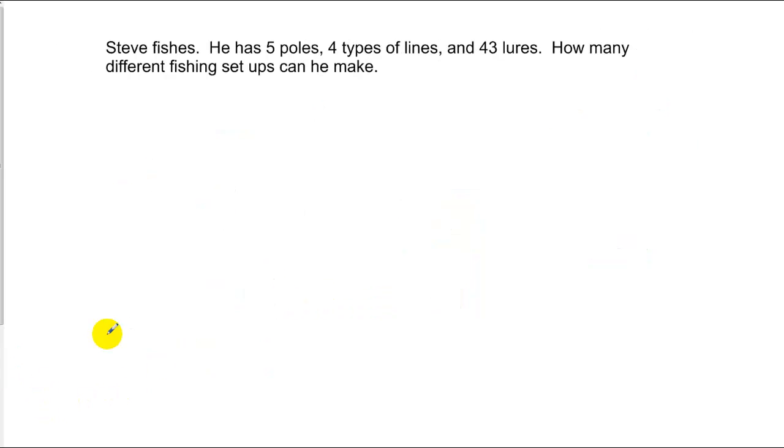Let's do a couple more examples like this. We've got a guy who fishes. He's got five poles, four types of line, and 43 different lures. You want to know how many different fishing setups he can make. One item of choice is the poles he can use, and he has five of those. He's got the line choices, four of those. And he's got 43 groups of lure choices. I want to know how many different ways he can put together his fishing setup. I just multiply all those together. And that's going to get me 860 different setups.